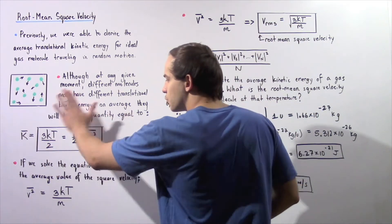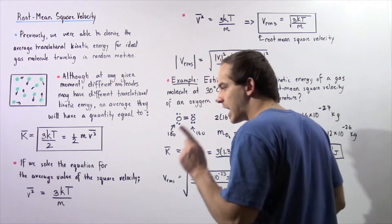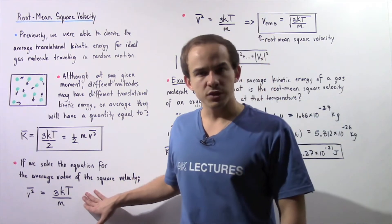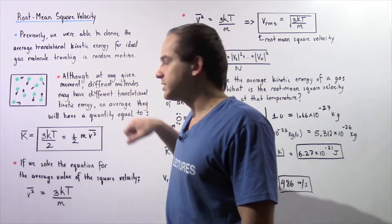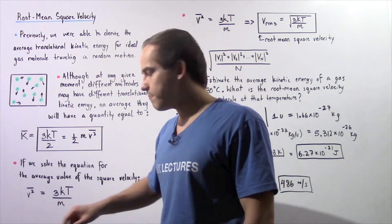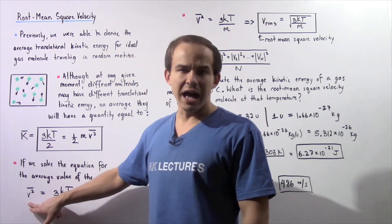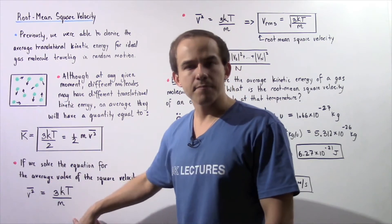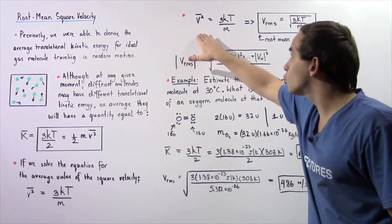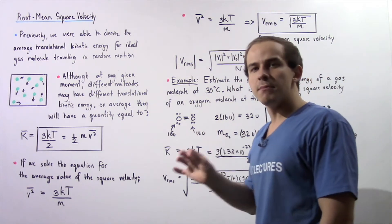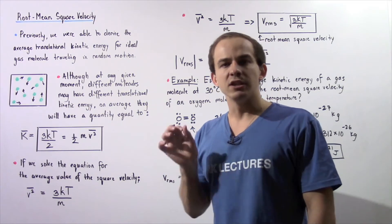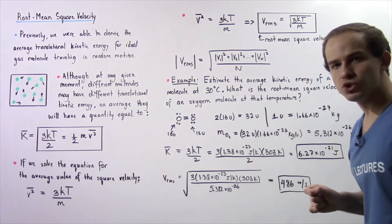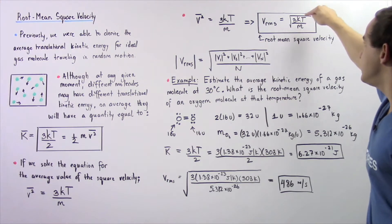If we take the equation derived in the previous lecture and solve for the average value of the square velocity, we multiply both sides by 2 and divide both sides by m. We find that the average value of the square of the velocity equals 3kT divided by m. Taking the square root of both sides, we obtain what is known as the root mean square velocity, v_rms, which equals the square root of 3kT divided by m.